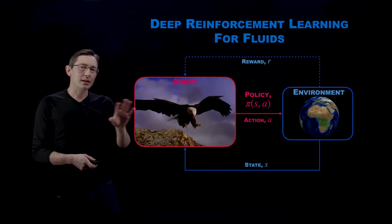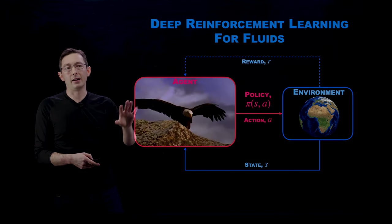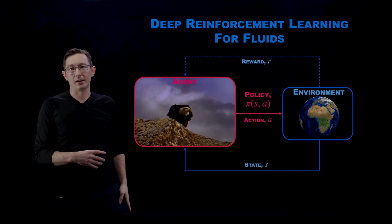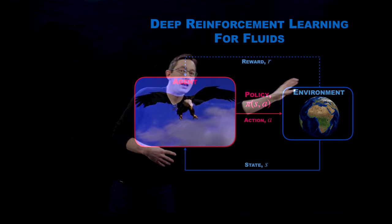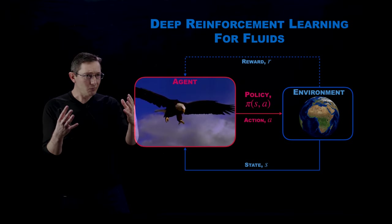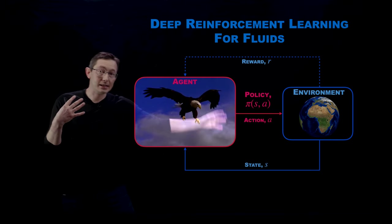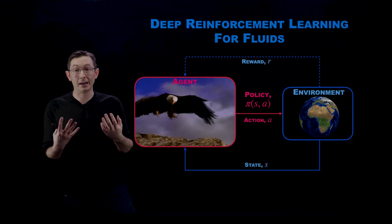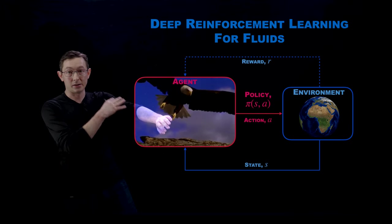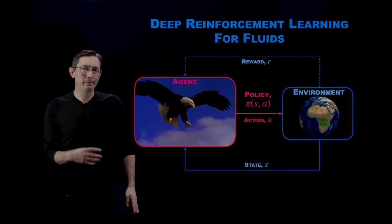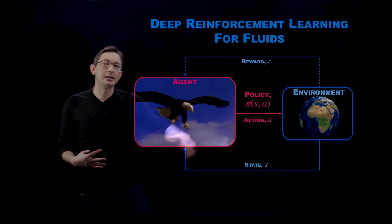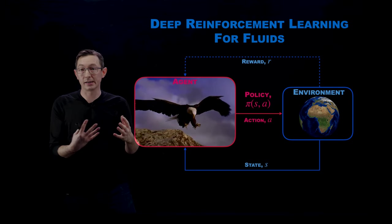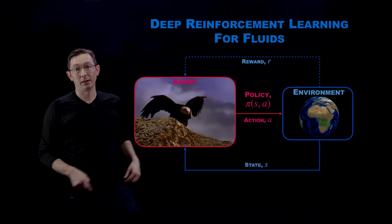Just a very brief reminder of the setup for reinforcement learning. We have our agent, in this case our eagle, interacting with some environment—our unsteady flow field. It has a state that it measures through its eyes, through its vision, also through the sensing on its wings, so maybe it can feel a bit of the flow field. It has some policy for how it decides its actions based on what it's sensing about the current state, the past states, and what it thinks the future states are going to be.